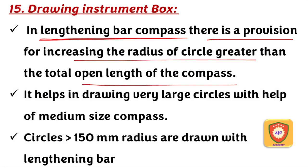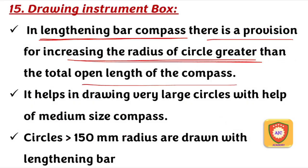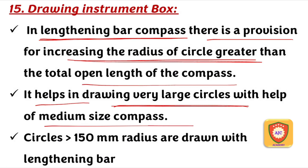This is the spring bow instrument. The lengthening bar is attached to the compass to help draw very large circles using a medium-sized compass.